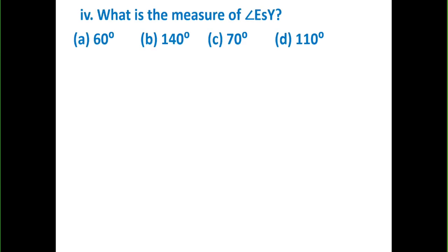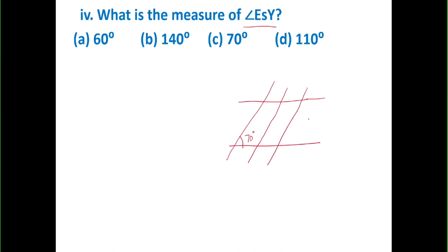The next question: what is the measure of angle ESY? This angle exists at point S in our figure. Looking at the figure, the two parallel lines are drawn with the streets as transversals, and angle S — mentioned as ESY — is at the intersection on road XY. Angle S is nothing other than 70 degrees. So our final answer is 70 degrees.